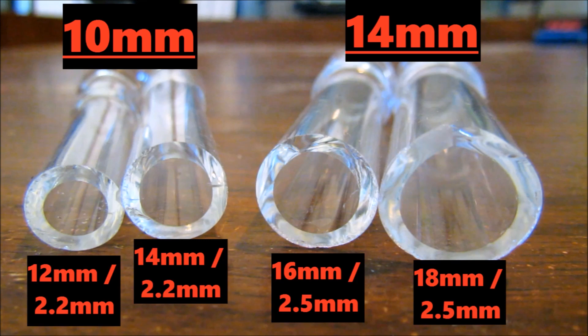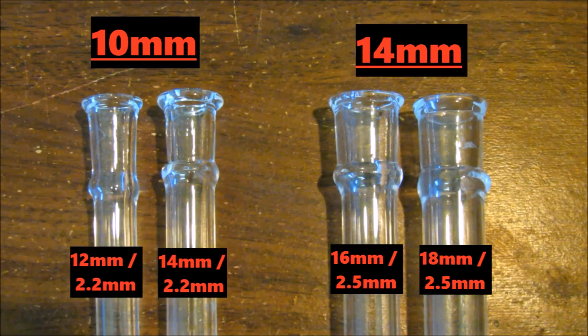The tube required to flare open the joint can vary. This will depend on the tube diameter and wall thickness. Many combinations will provide a perfect 10 millimeter or 14 millimeter joint, but the wall thickness of the joint will vary. This will take some trial and error.